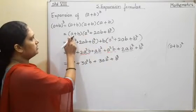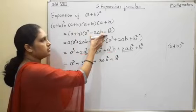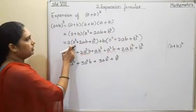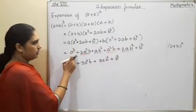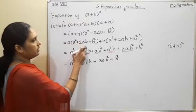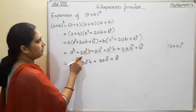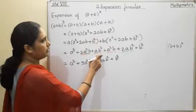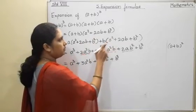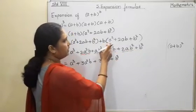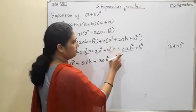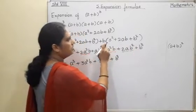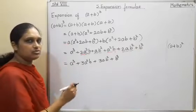Now we will multiply these two brackets. First number multiplied with the whole bracket, plus second number multiplied with the whole bracket. So a into a squared will be a cube, plus 2a squared b, plus a b squared. Then a squared b, plus 2ab squared, plus b raised to 3.